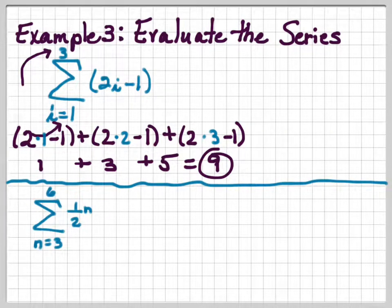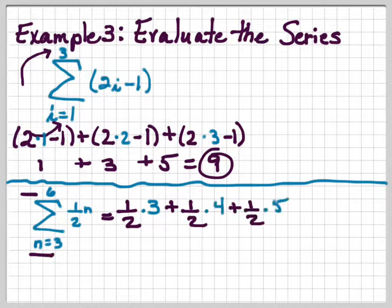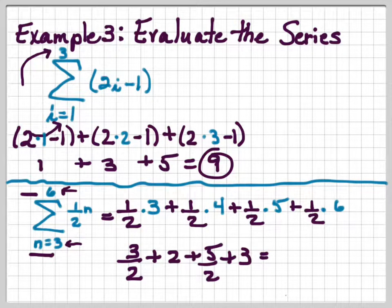Let's try another one. This time we're going to start at 3 and end at 6, and it's going to be 1 half n. So it would be 1 over 2 times 3, 1 over 2 times 4, 1 over 2 times 5, 1 over 2 times 6, starting at 3, ending at 6. There's going to be 3 halves plus 2. 1 half times 4 is 2, 5 times 1 half is 5 halves, and 1 half times 6 is 3. So we gather our terms. We have 2 plus 3 gives us 5, and 3 halves plus 5 halves is 8 halves, which is 4. So we have 5 plus 4 is 9.